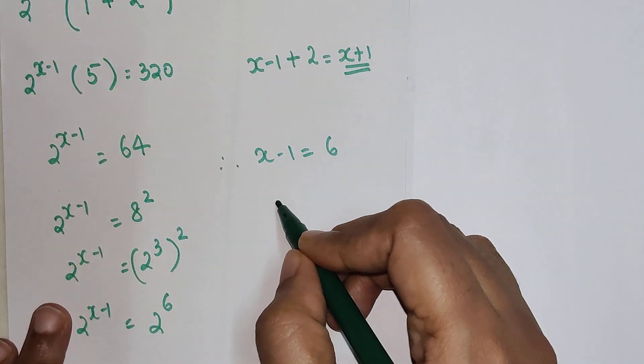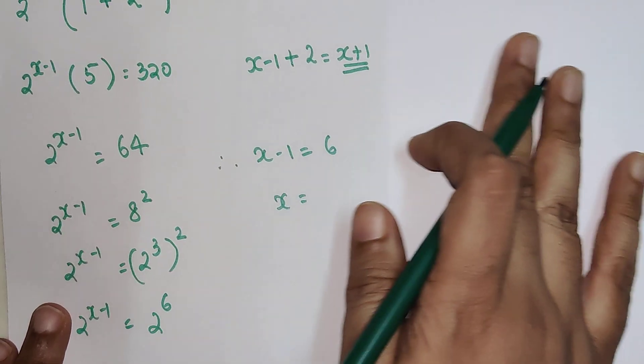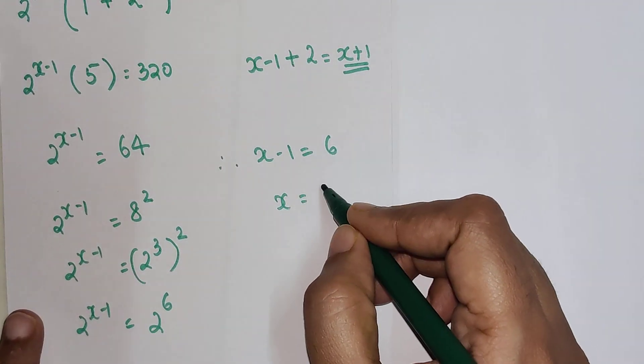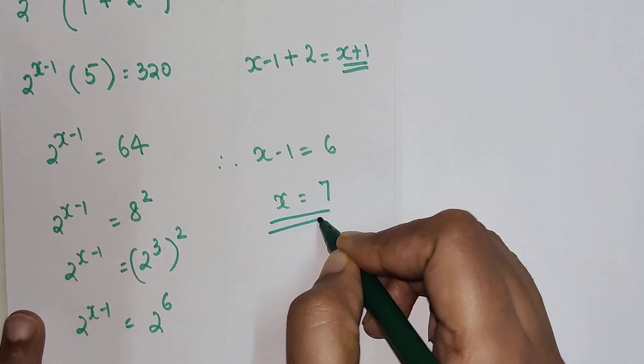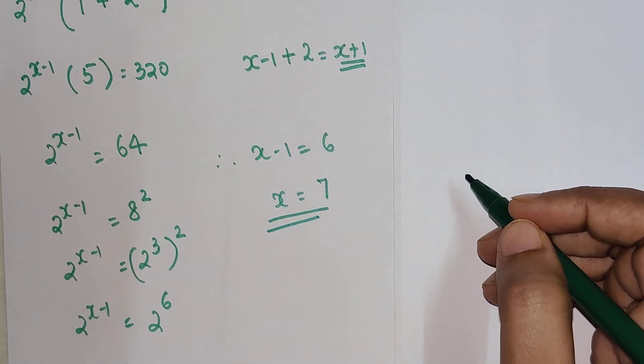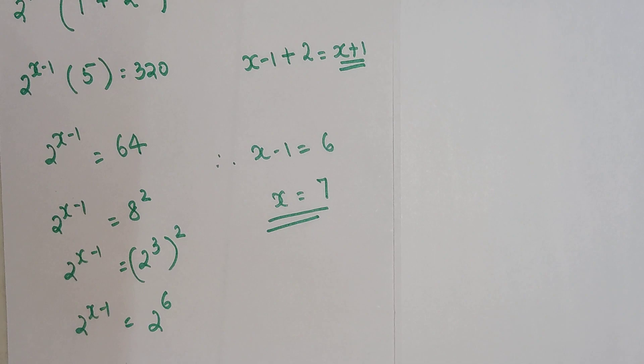Therefore, since the bases are now same, I can say the indices can now equate itself. So the value of x now becomes, when this minus 1 is shifted on the other side, I will get 7. So the final answer, value of x is 7. Do like and subscribe for many such videos.